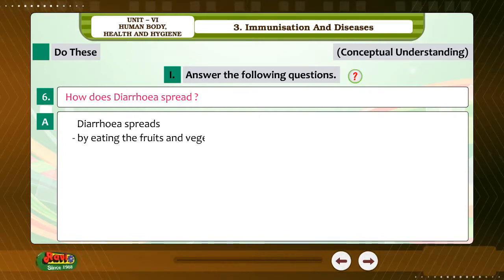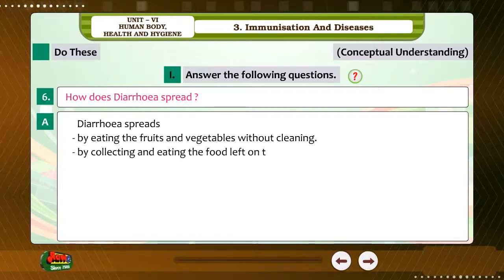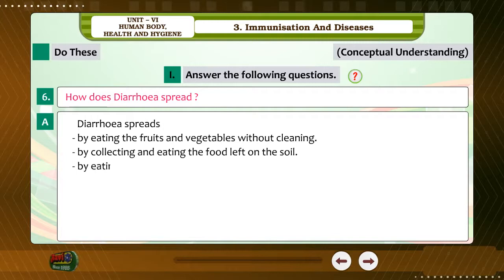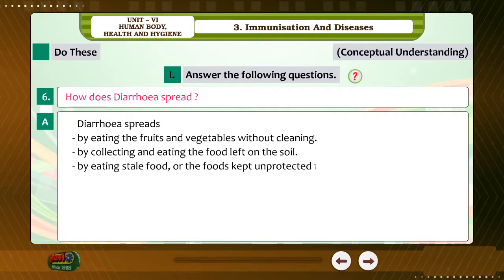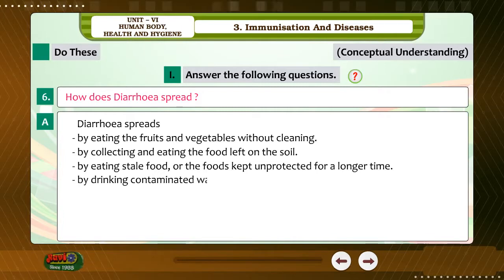Question 6: How does diarrhea spread? Answer: Diarrhea spreads by eating fruits and vegetables without cleaning, by collecting and eating food left on the soil, by eating stale food or foods kept unprotected for a longer time, and by drinking contaminated water.